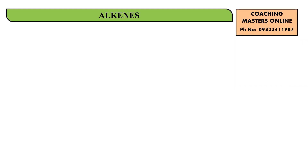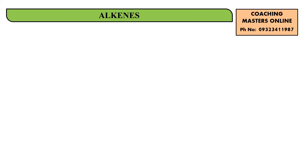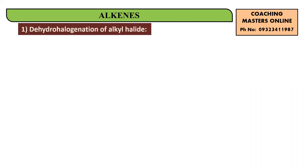Hello students, today we are going to discuss a very important reaction and rule called the dehydrohalogenation of alkyl halides with Zaitsev's rule. The very first thing we need to know is what exactly dehydrohalogenation is. Let's take an example — suppose you have an alkyl halide.